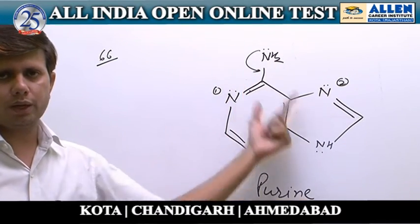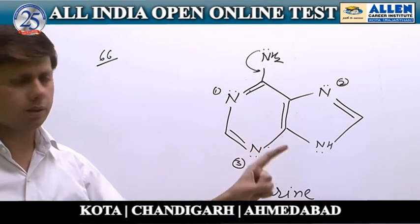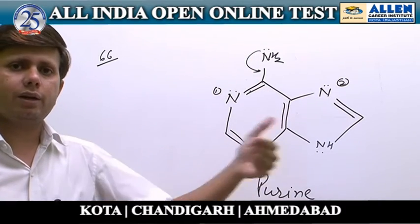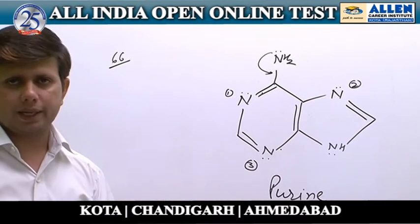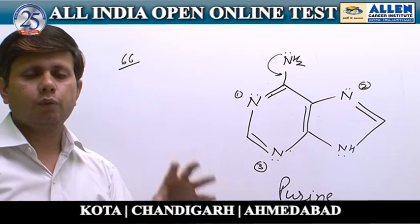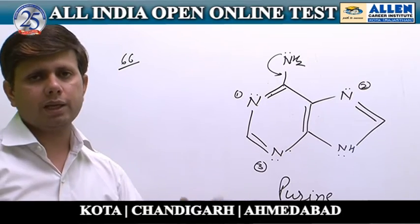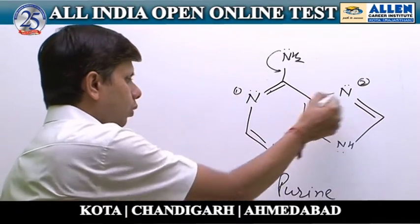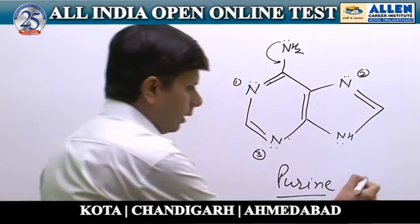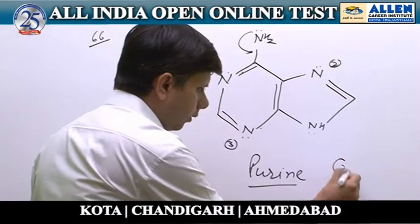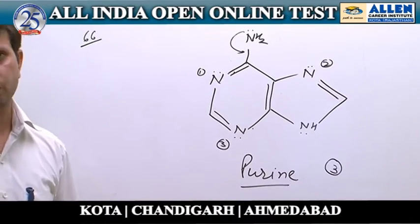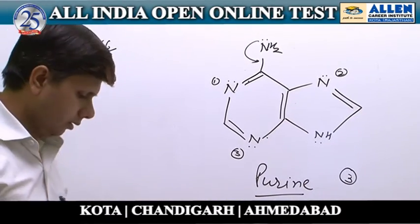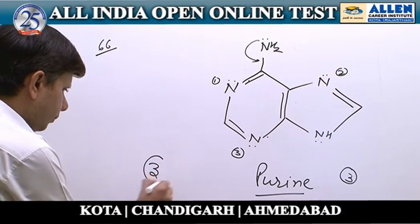Since lone pairs on those three nitrogen atoms are localized, their availability for protonation is greater. So there are 3 active basic sites in purine. The correct answer is the third option.